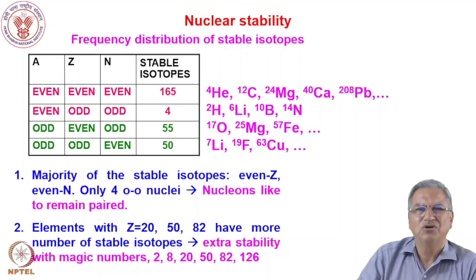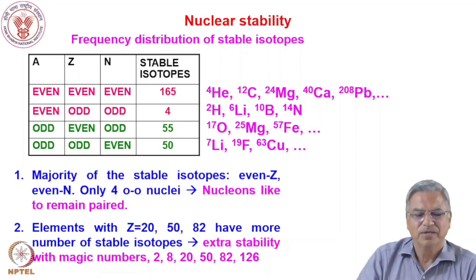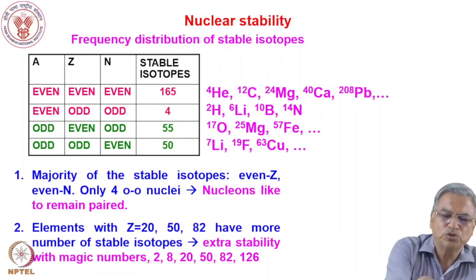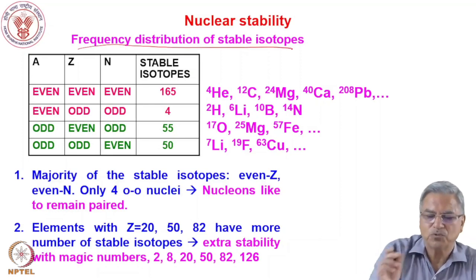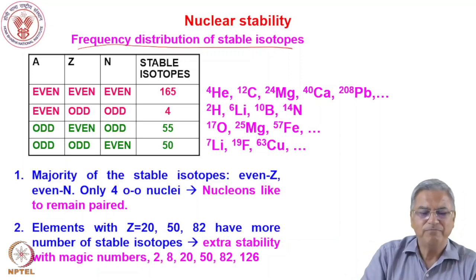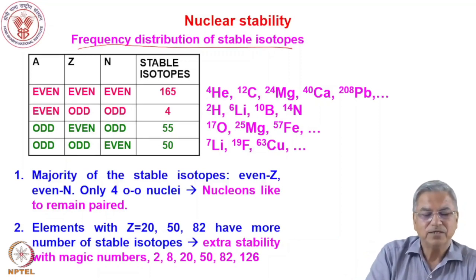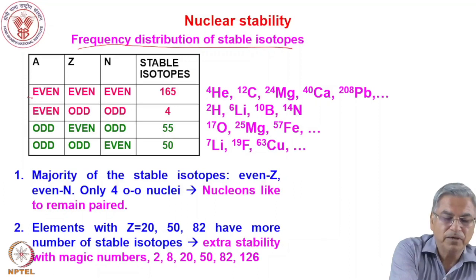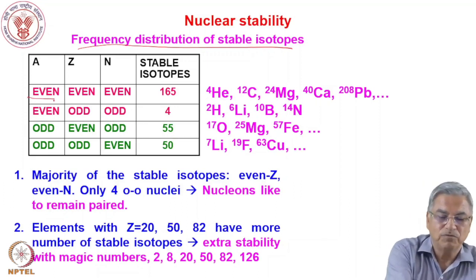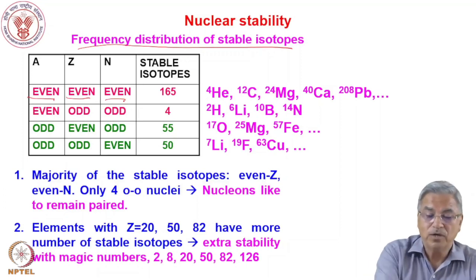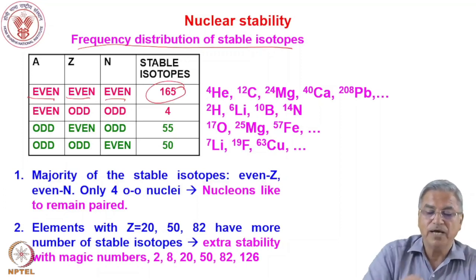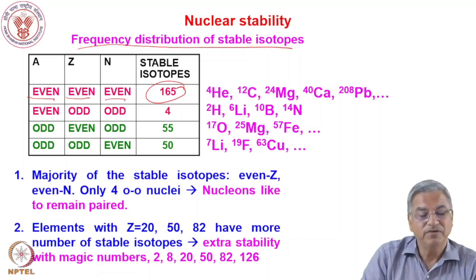Now we will discuss what are the factors that govern stability of nuclei. A very simple way of explaining is to see the frequency distribution of stable isotopes. What I have made here is a table containing the different configurations of protons and neutrons constituting nuclei. Even mass number can come from even Z and even N, and there are 165 nuclei which are stable having even-even configuration.